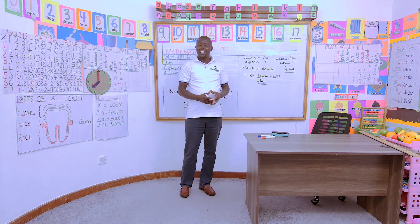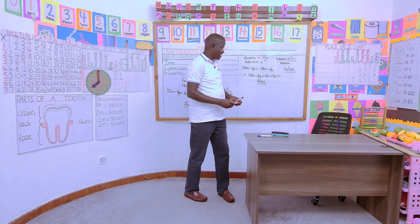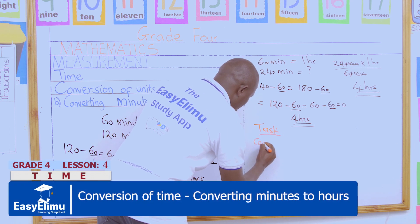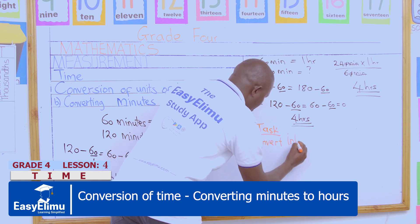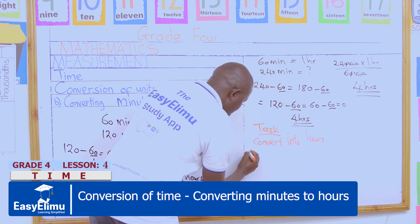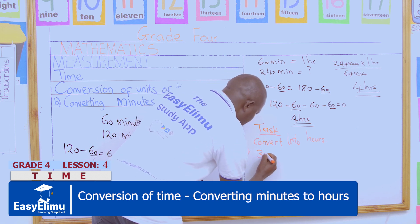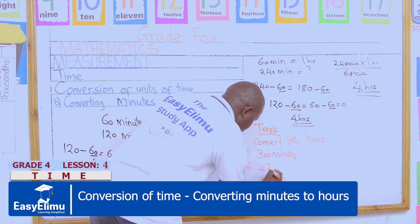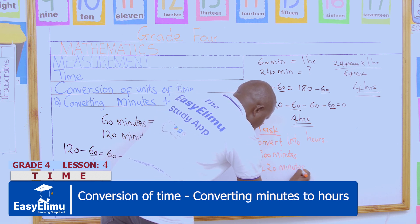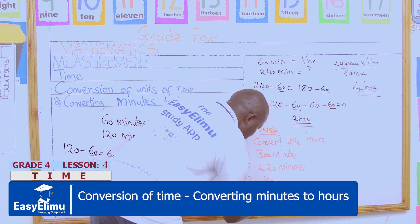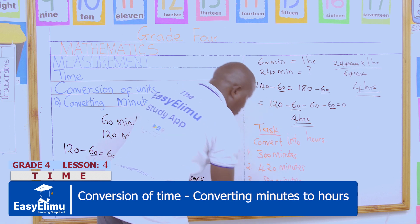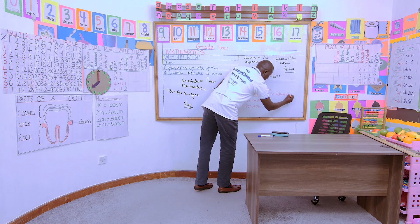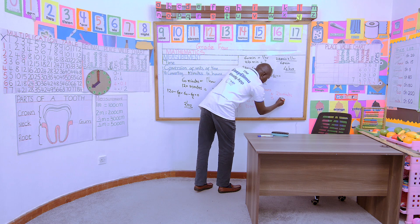This is how to convert minutes into hours. Now I have a task for us. Convert the following into hours: Number 1 — 300 minutes. Number 2 — 420 minutes. Number 3 — 80 minutes. Number 4 — 210 minutes. Number 5 — 160 minutes.